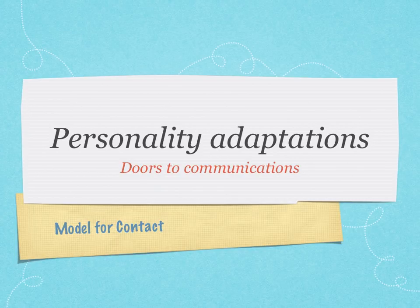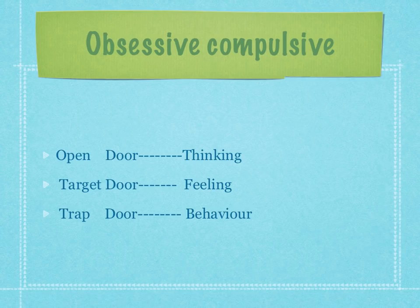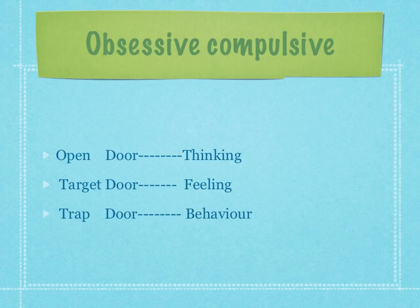Let's look at the six adaptations. First is the adaptation called obsessive-compulsive. These are people who are quite black and white in their thinking. They are usually very tied into shoulds, oughts, wants, musts — in other words, a lot of energy in the high parent ego state. They have a psychological system where they go around with a high defining parent in their head.